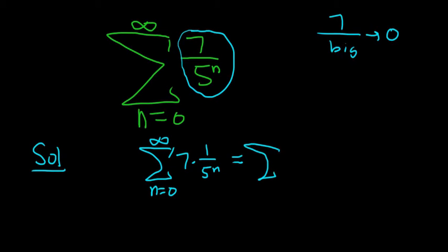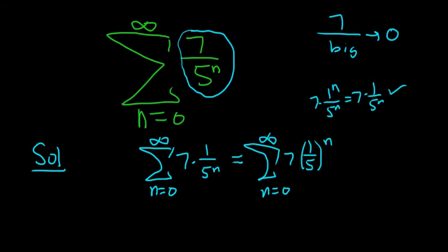So we can write it again the following way as 1 over 5 to the n. You see, because this is the same as 1 to the n over 5 to the n, and with a 7, so it's the same as 7 times 1 over 5 to the n. So it's the same thing because 1 to any power is 1.